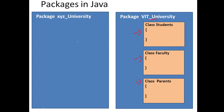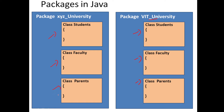I can have another package for XYZ University. Inside this I can also have a few classes grouped under it. Both packages can have classes with the same name — that is allowed because we are grouping them under different packages. The students' data members and methods for one university can be different from those of another university, but ultimately both have students. There will be no naming conflicts; you can use the same names in different packages.